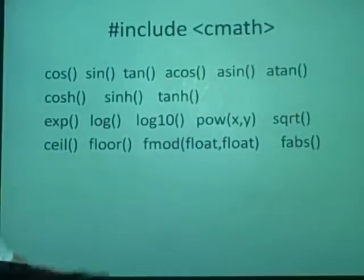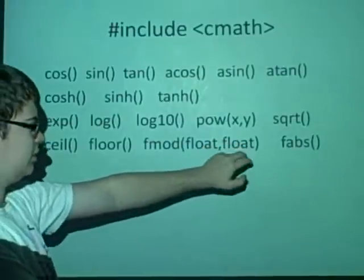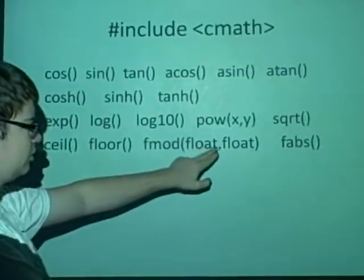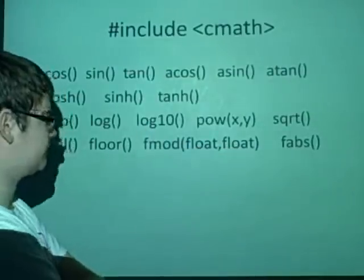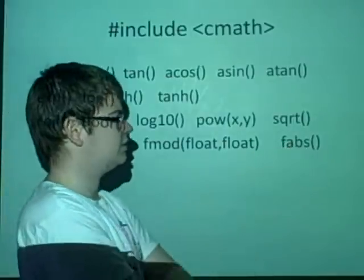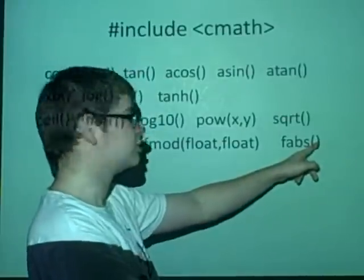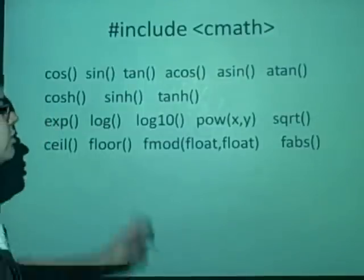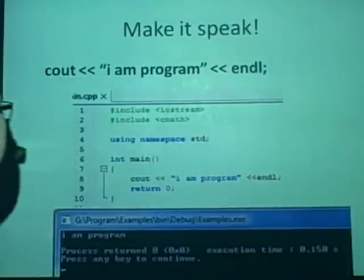Fmod, this finds the modular, but it only works with floating point values. So you could have 2 and then 1.4 here, and that would output the answer 0.6. Fabs, this finds the absolute value. So you could put a value in there. If you had A equal to minus 3, for example, then that would output 3. And again, we have to put semicolon to the end of all these, otherwise it won't work.